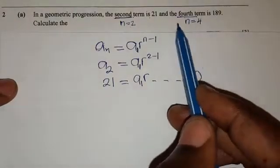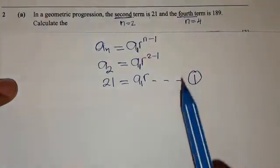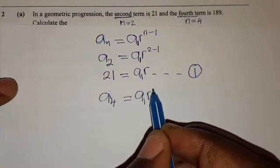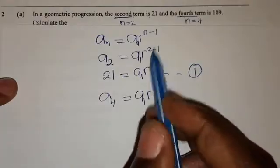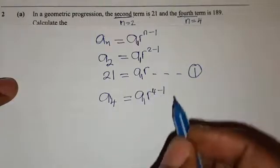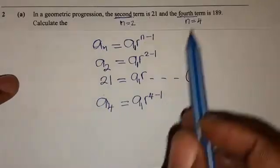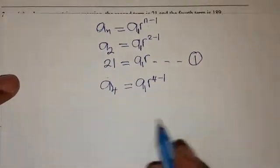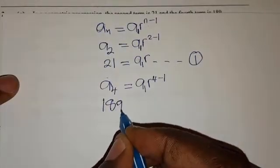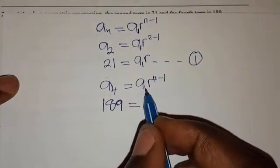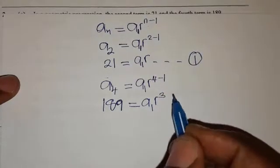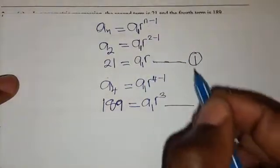Now we form the second equation for the fourth term, where N is equal to 4. A4 = A1 × R^(4−1). The fourth term is 189, so we have 189 = A1 × R³. This is our second equation.